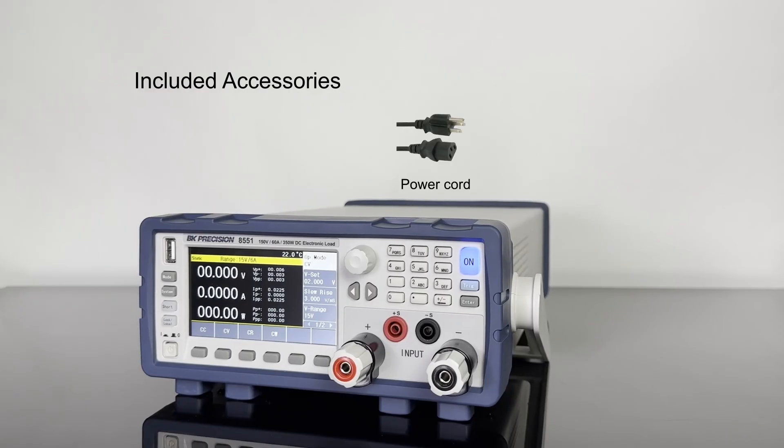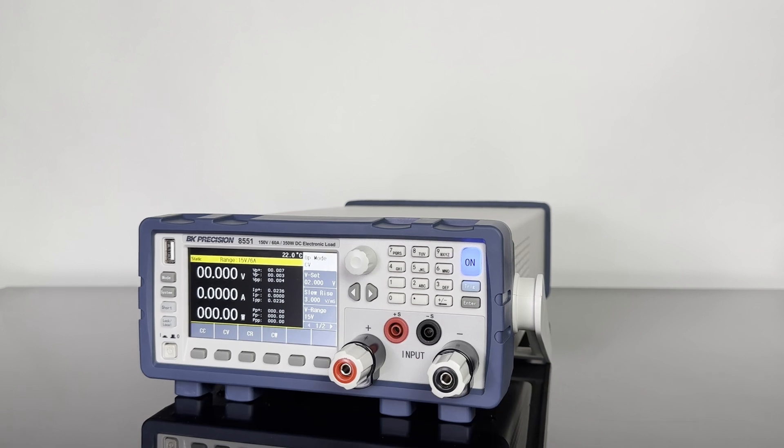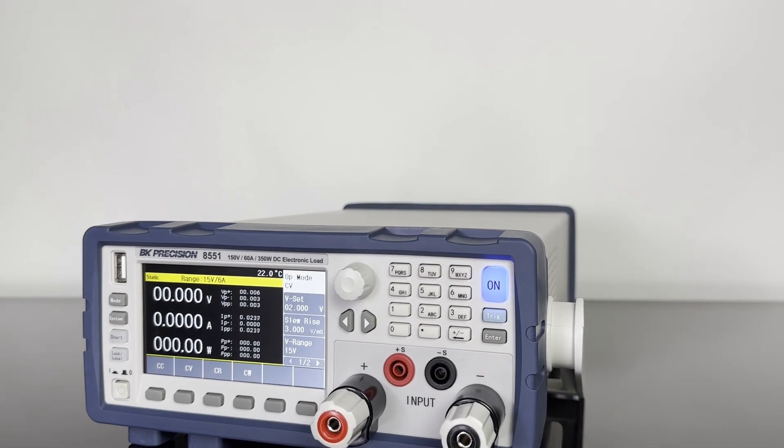A power cord and certificate of calibration are included in the box. The 8550 series delivers performance and dependability at a value price. To learn more, view the data sheet linked in the description below or visit bkprecision.com.